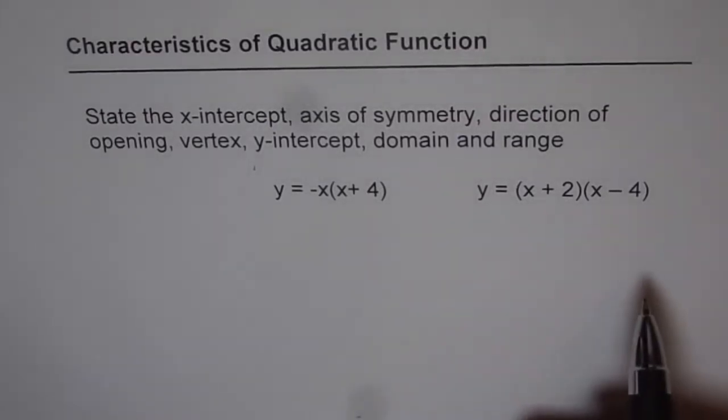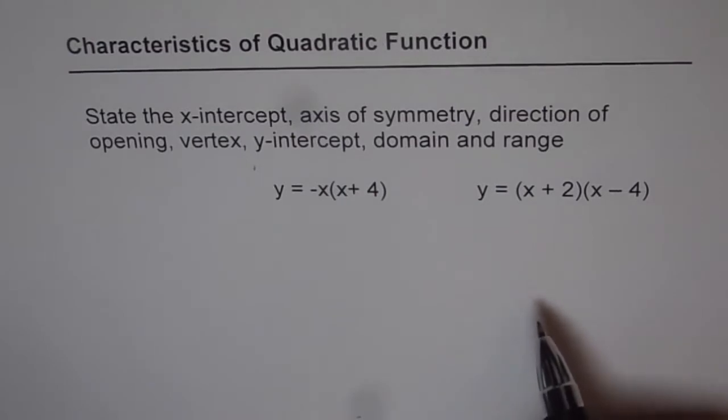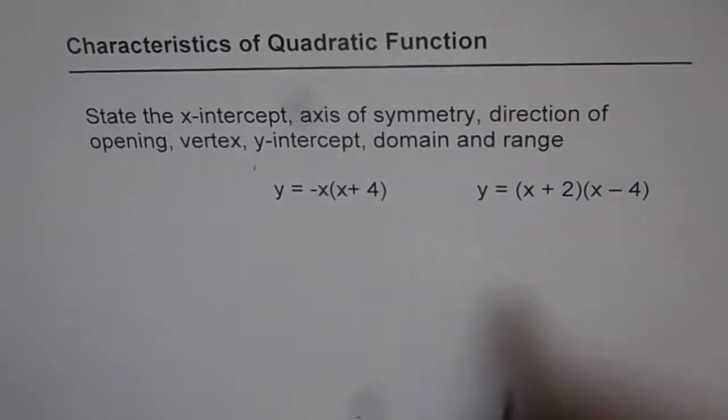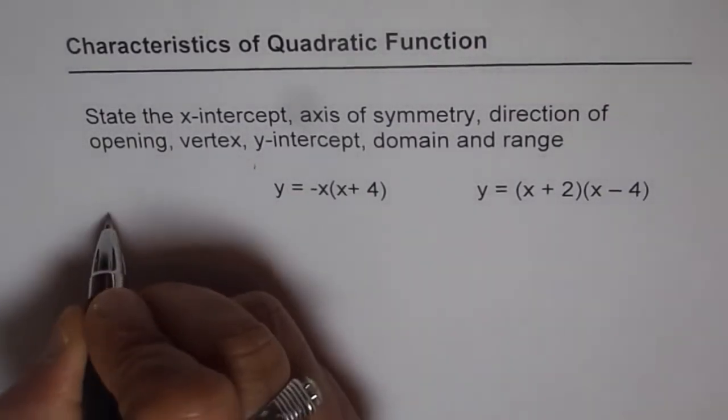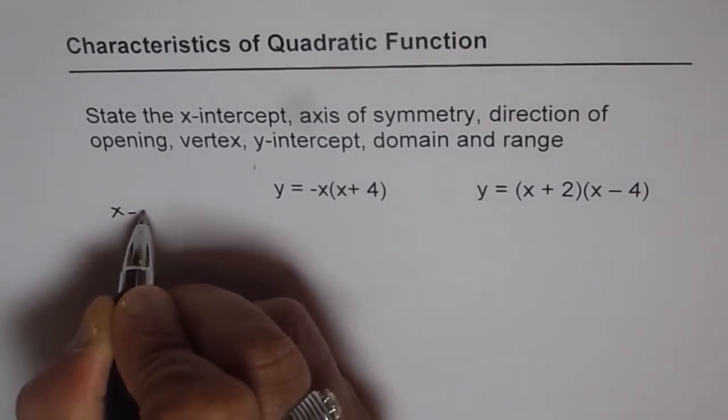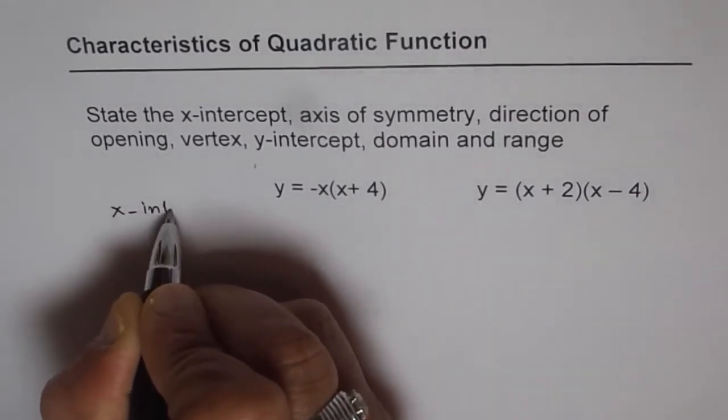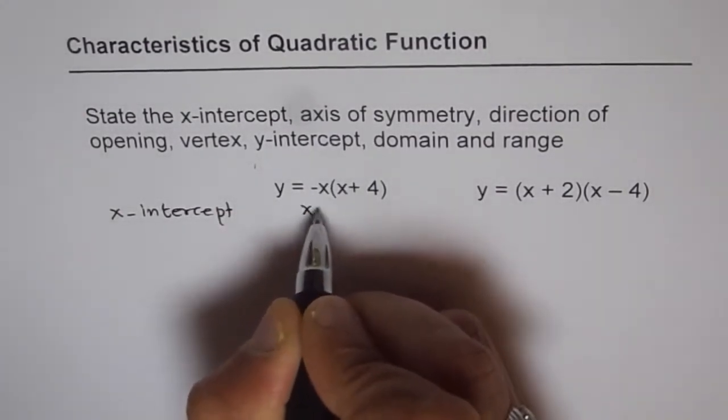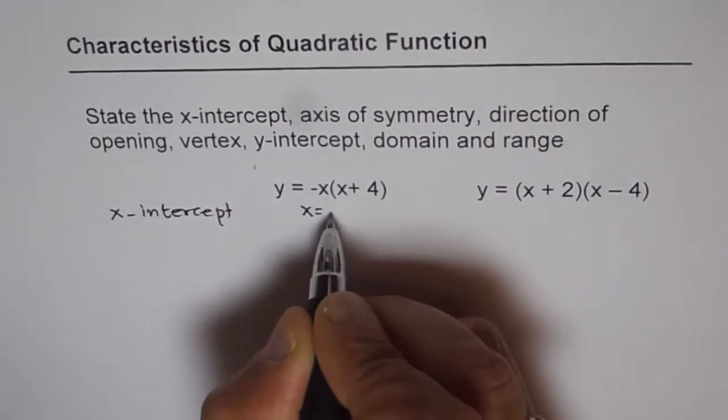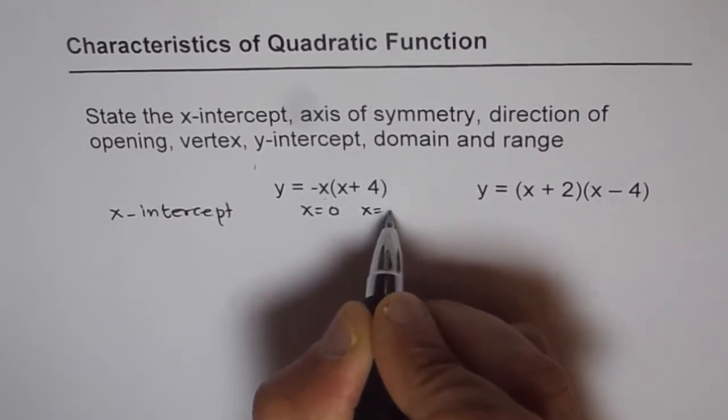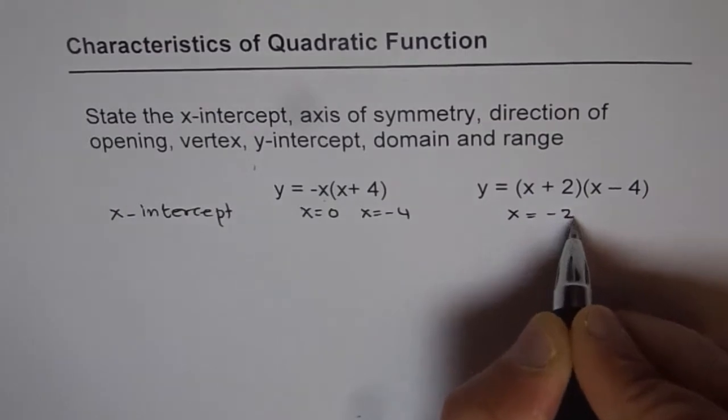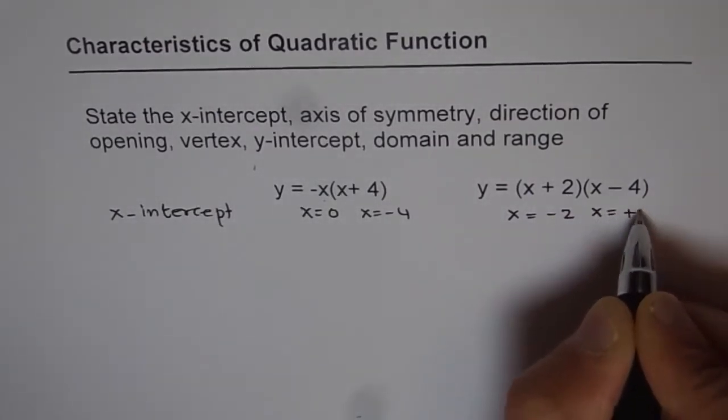So we have two equations here. Both of them are in factored form. And let's see how to answer these questions when the equation is given to us in factored form. Now x-intercept is probably the easiest to read from equations in this form. So x-intercept for us here is at x equals to 0 and at x equals to minus 4. For this equation it is x equals to minus 2 and x equals to plus 4.